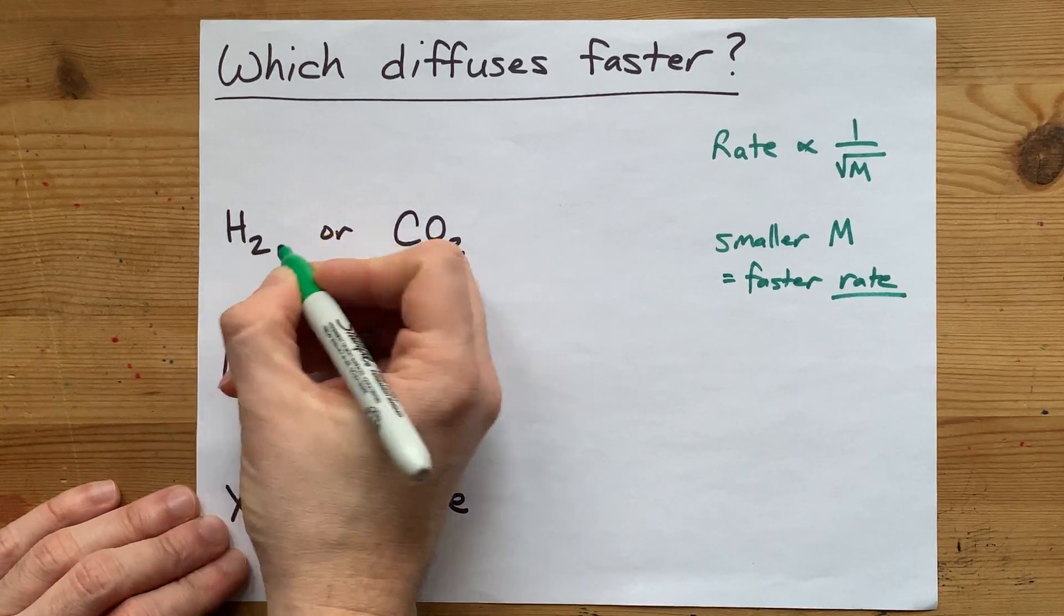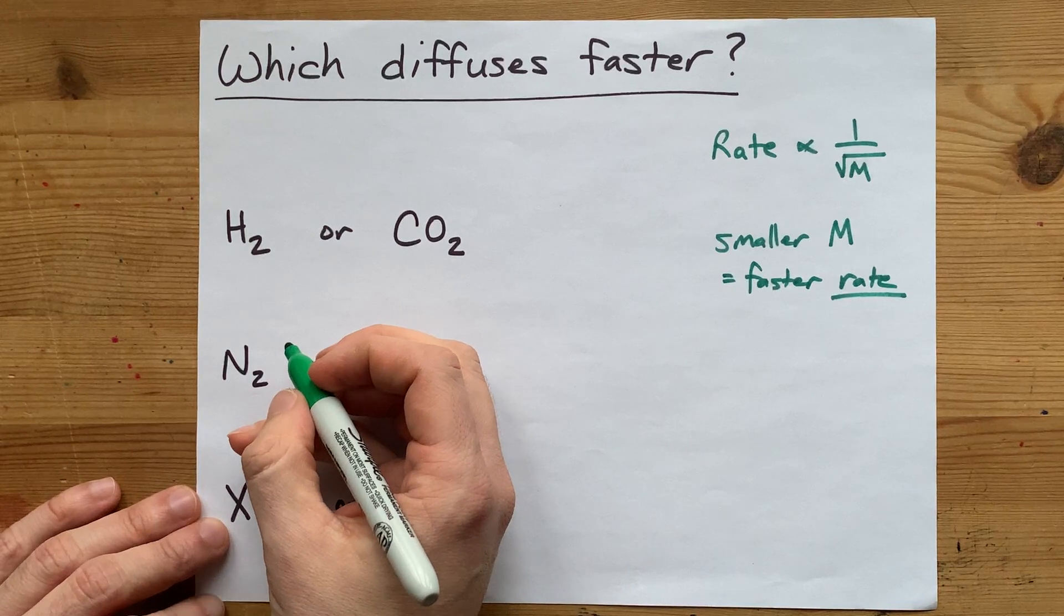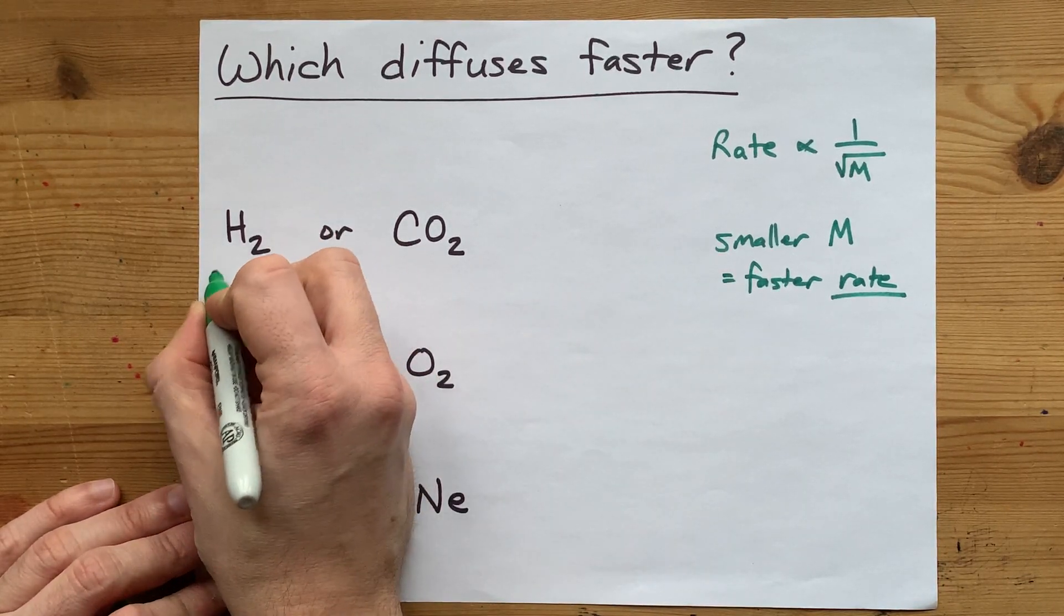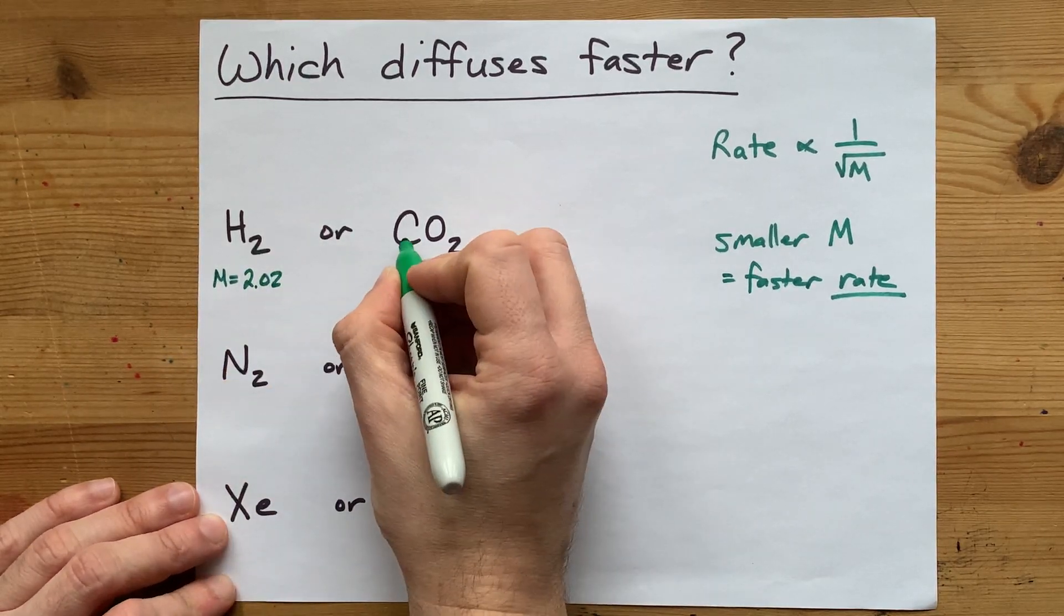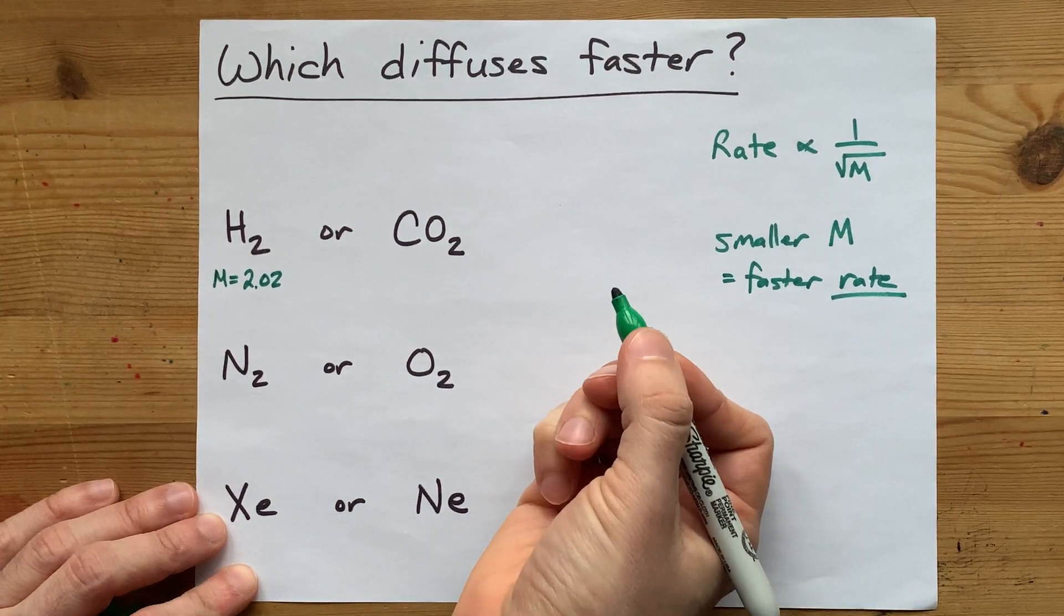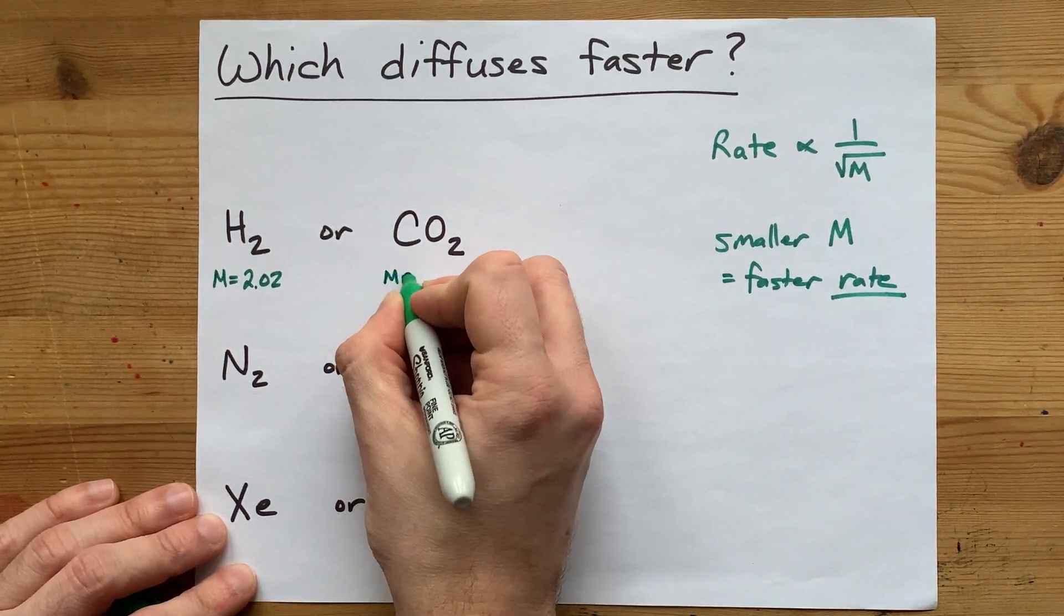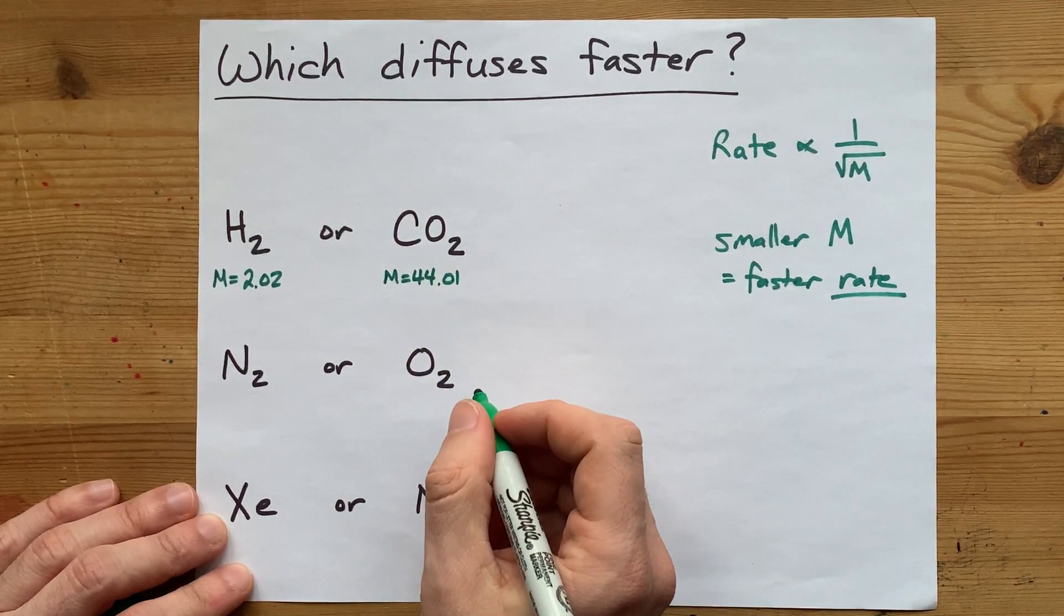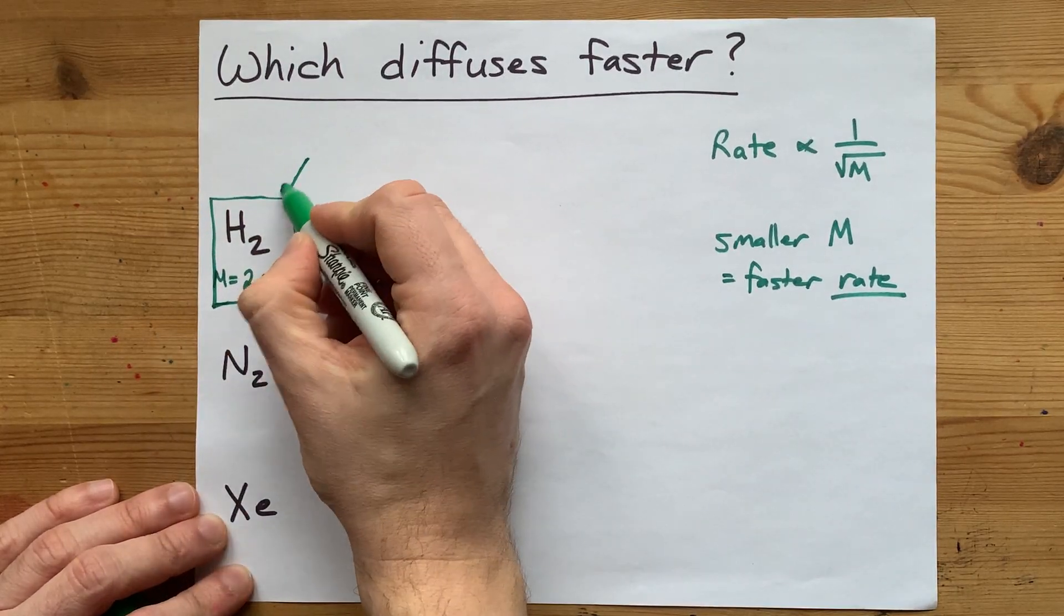Well, if you look up H on the periodic table, it's about 1.01 AMUs per H. There's two of them. The molar mass is about 2 grams per mole. If you look up carbon, it's already 12, plus two oxygens is 16 each. The molar mass here is 44 grams per mole. The smaller of the two is the one that diffuses faster.